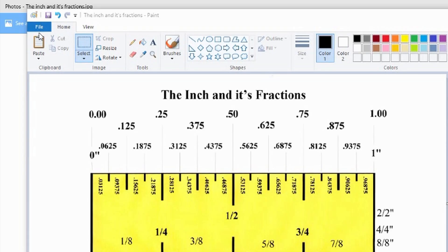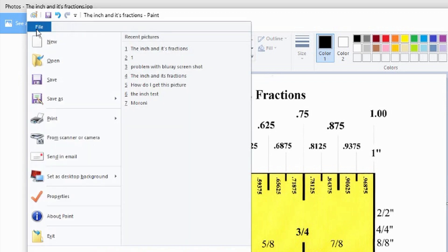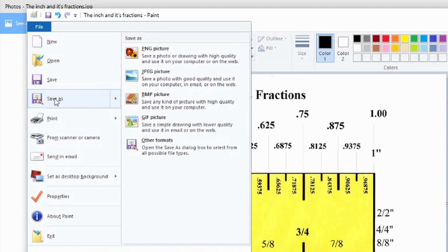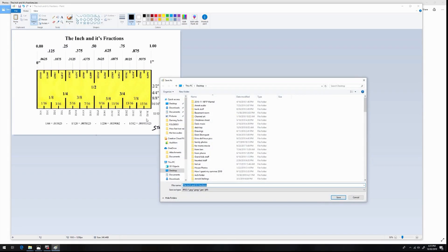Now up in the upper left corner, click on File, come down to Save As. Now you have these many options, but I'm just going to go with a JPEG, and I'm going to name it the inch and its fractions. I'm going to click Save.